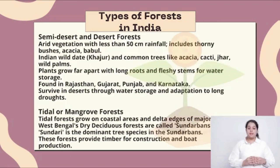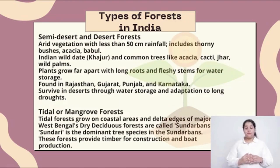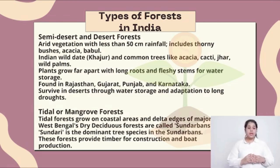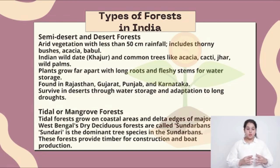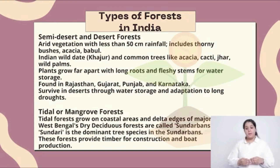Semi-desert and desert forest. Sparse vegetation with less than 50 cm of rainfall, including thorny bushes and babul, Indian wild date, hajur, and common trees like akhya, cacti, jhar and wild bump. Plants grow far apart with long roots and fleshy stems for water storage. It is found in Rajasthan, Gujarat, Punjab and Karnataka.